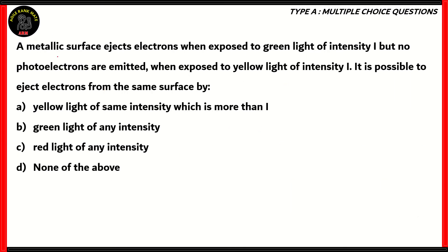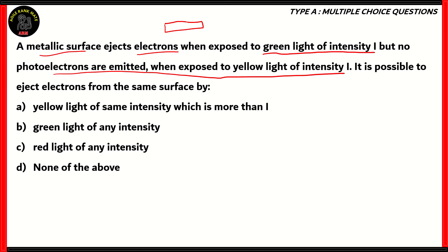Now let's look at another question. A metallic surface ejects electrons when exposed to green light of intensity I, but no photoelectrons are emitted when exposed to yellow light of intensity I. The question is: is it possible to eject electrons from the same surface using yellow light of the same intensity which is more than I, green light of any intensity, red light of any intensity, or none of the above?